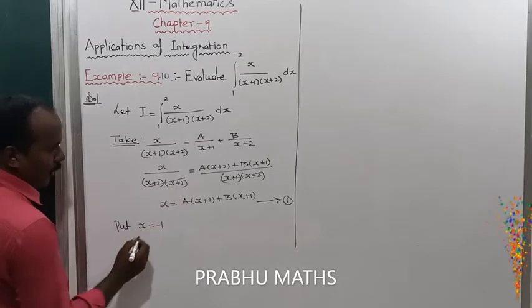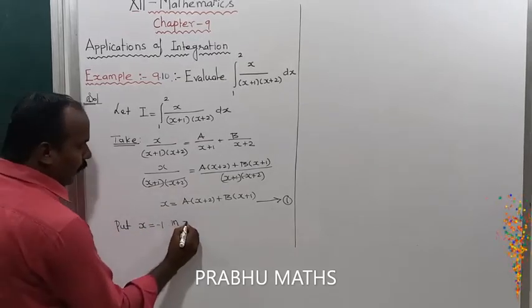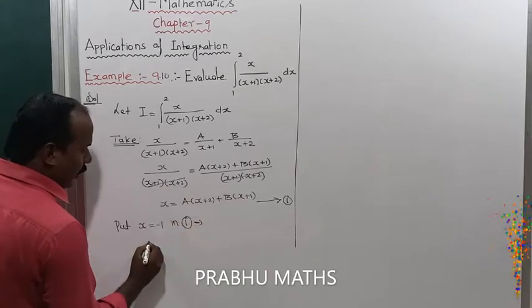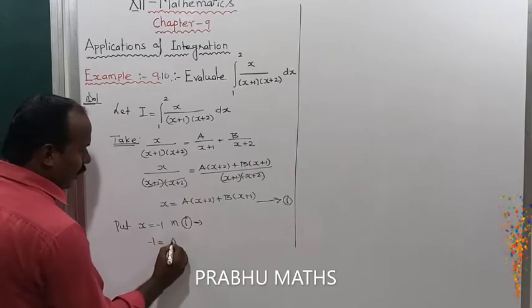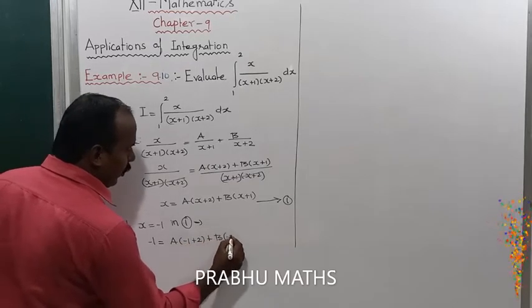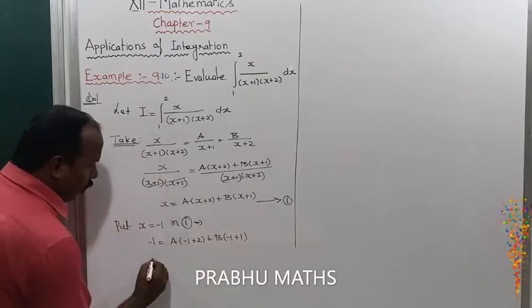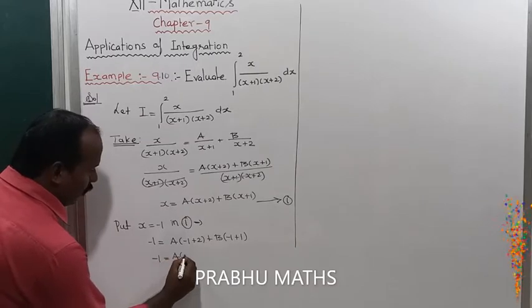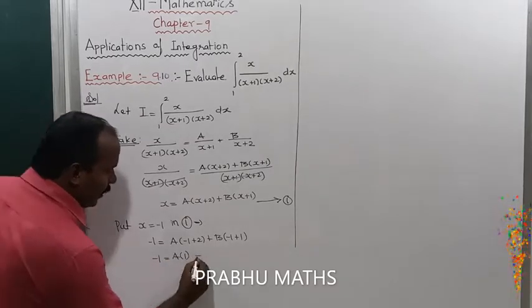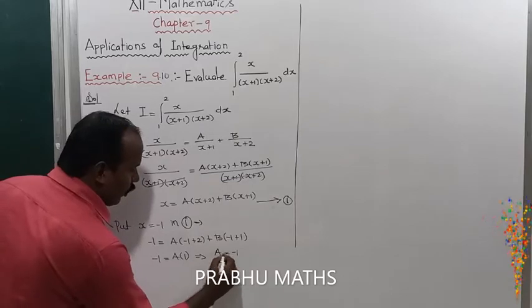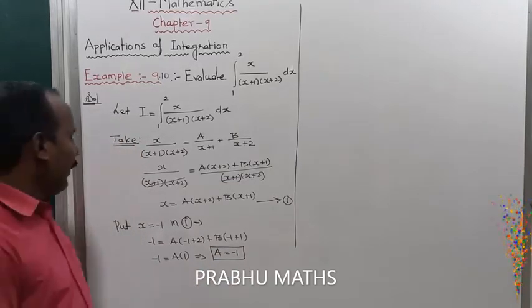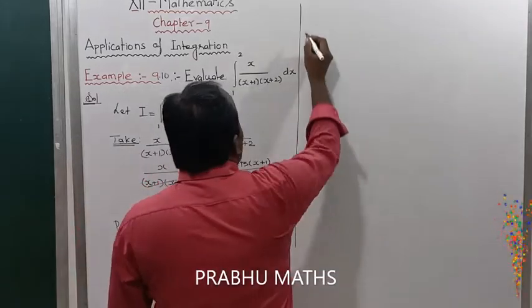Put x = -1 in equation number 1. This implies that -1 = A(-1+2) + B(-1+1), so -1 = A(1) + B(0), which implies A = -1.